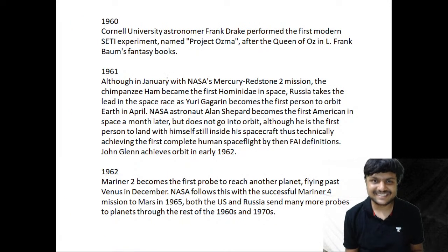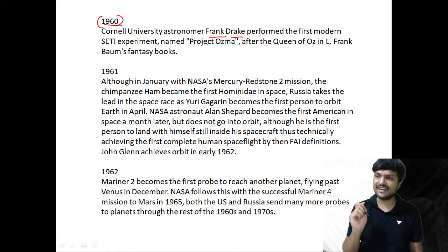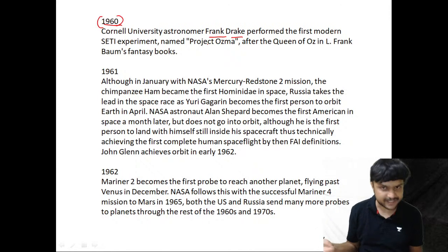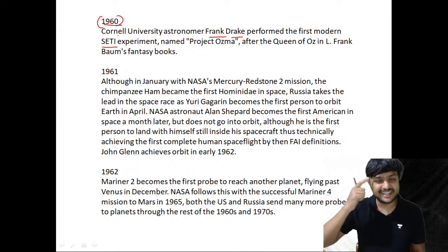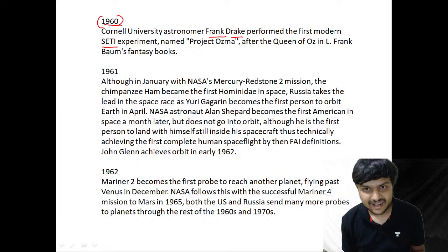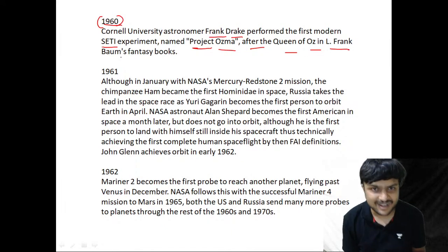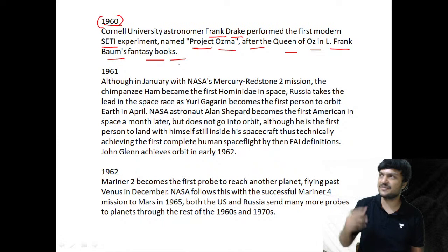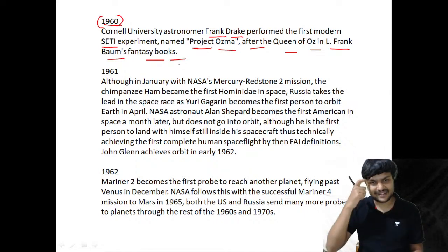In 1960, Frank Drake — who has the famous Drake equation — wanted to find whether there were any civilizations outside our solar system. He was a professor and astronomer from Cornell University who performed the first modern SETI experiment — Search for Extraterrestrial Intelligence. He named the project 'Project Ozma,' after the queen of Oz in L. Frank Baum's fantasy books.